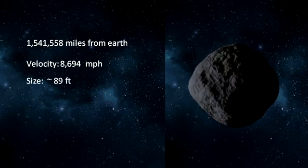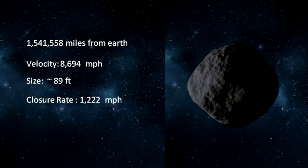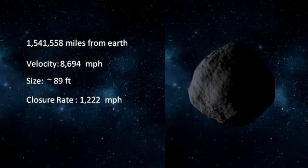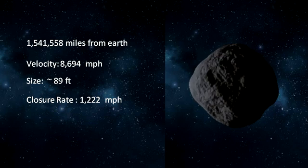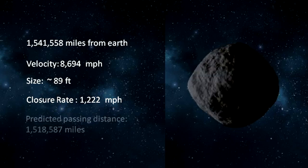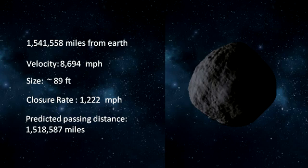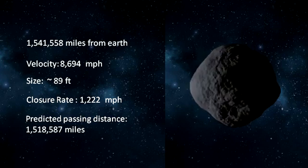The closure rate of 2022 CF3 is 1,222 miles per hour. Its predicted passing distance is 1,518,587 miles.